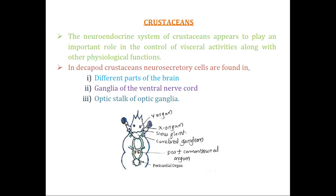So far we were discussing about the neuroendocrine system in insects; now we are moving to the neuroendocrine system of crustaceans. In the case of crustaceans, the neuroendocrine system is important as it regulates mainly the visceral activities in addition to other physiological functions. Visceral activity means the functioning of the visceral organs — different organs present in our viscera, such as the liver and heart. In the case of decapod crustaceans — crustaceans having 10 legs.